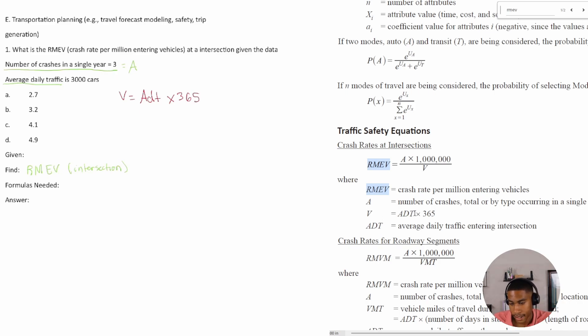Do we have ADT? Because I don't know what V is, so I don't have V, but do we have ADT? Well, ADT is the average daily traffic entering the intersection. Average daily traffic that we have is 3,000 cars. So we do in fact have ADT, so now we can solve for V.